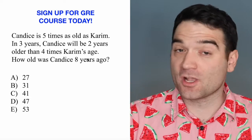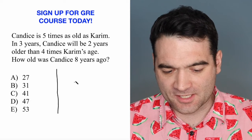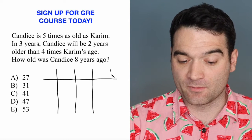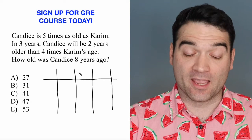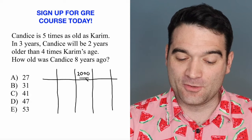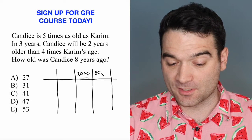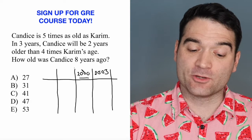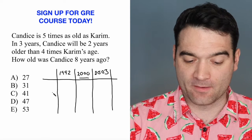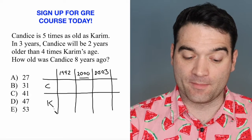Here's how it goes. Whenever I have an age question, I like to set up a table with the years we're dealing with. There are three years we're talking about: today, which I'll call the year 2000; three years from now, which is 2003; and eight years before 2000, which was 1992. Then we write our characters — we have Candice and we have Kareem.